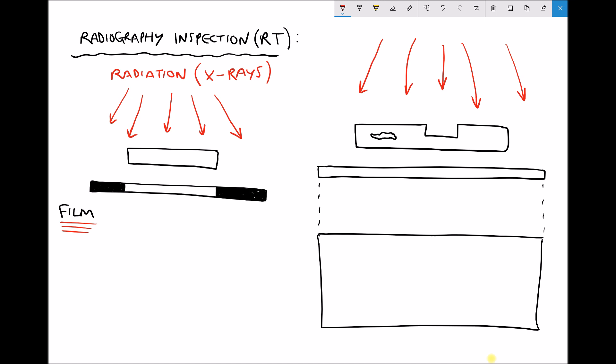Recall that where the x-rays are not obscured the film's going to turn black and where the x-rays are obscured it's going to be represented by white regions on the film. But we have these two defects so we need to consider how they're going to appear on the film.